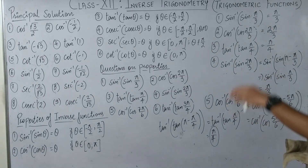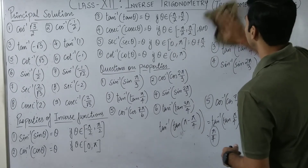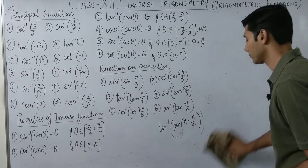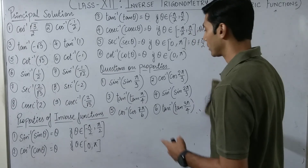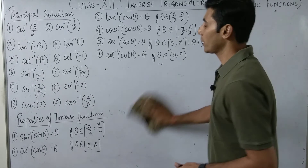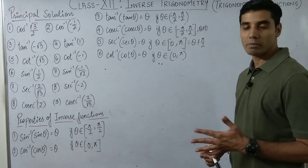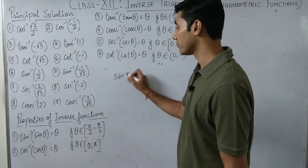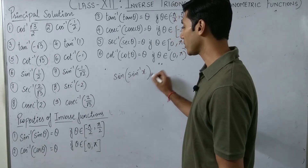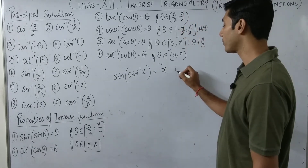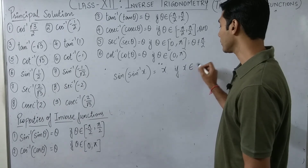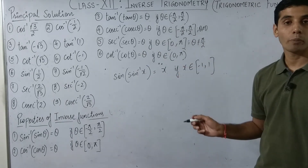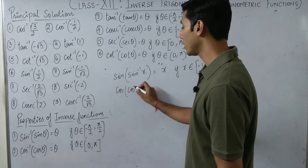Now rubbing off the board and moving to further properties. There are also properties of the form: sin(sin⁻¹x) = x, if x belongs to [-1, 1]. Similarly, cos(cos⁻¹x) = x, within its respective domain. These are valid by the same domain values you studied in the first lecture — just copy those domain restrictions for each function.